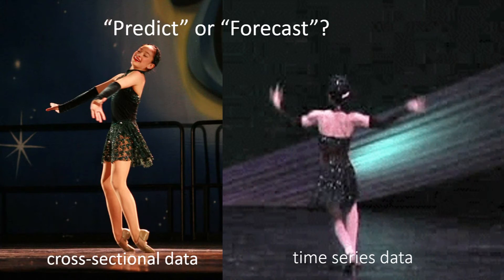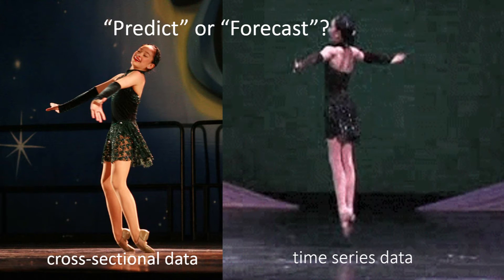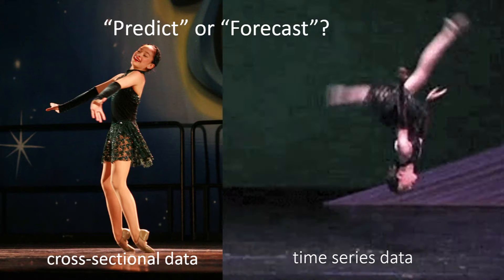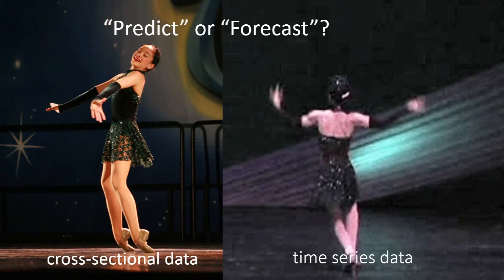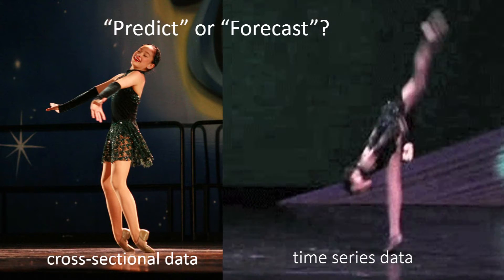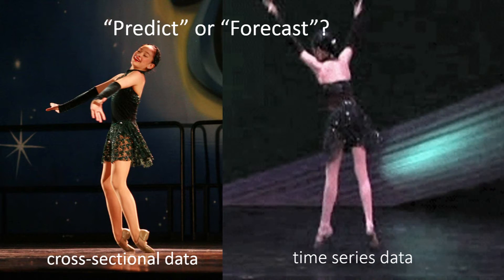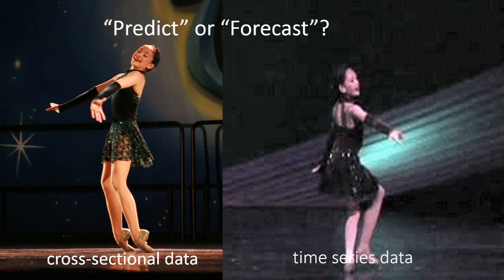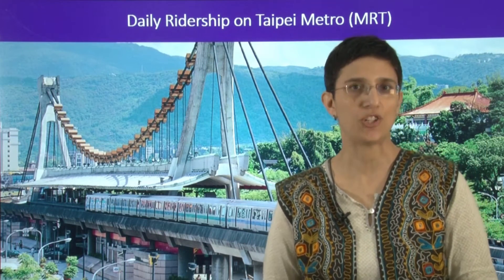You might have heard the term 'predict' in addition to 'forecast,' and maybe you're wondering what's the difference between them. Actually, they mean the same. But in the world of statistics, we tend to use the word 'predict' in the cross-sectional context, where we have data on many observations at one time point, whereas we reserve the term 'forecast' for a time series context where we're measuring one thing over time. That's similar to the distinction between a still photo and a video. Let's look at an example and some data so that we can start talking about notation and terminology.